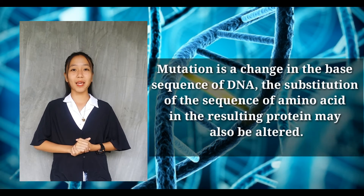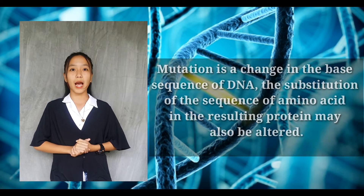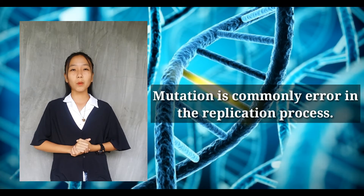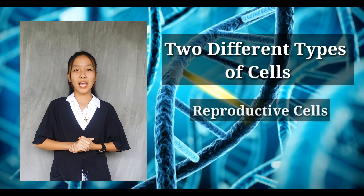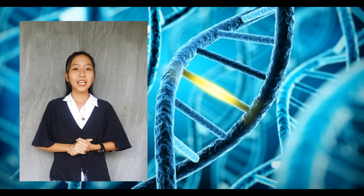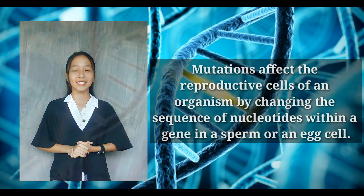Mutation is a change in the base sequence of DNA. The substitution of the sequence of amino acids in the resulting protein may also be altered. Mutation is commonly an error in the replication process. Mutation can occur in two different types of cells: reproductive cells and somatic cells. Mutations affect the reproductive cells of an organism by changing the sequence of nucleotides within a gene in a sperm or egg cell.